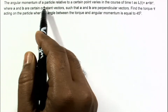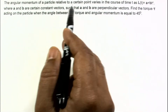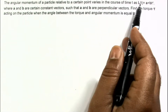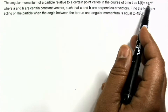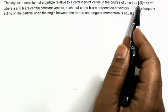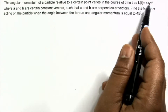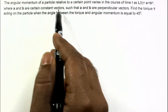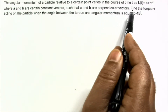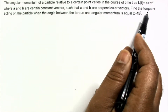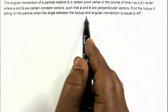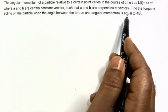In this problem, the angular momentum of a particle relative to a certain point varies with time as l = a + bt², where l, a, and b are vectors. Here a and b are certain constant vectors such that a and b are perpendicular. Find the torque tau acting on the particle when the angle between the torque and angular momentum is equal to 45 degrees.